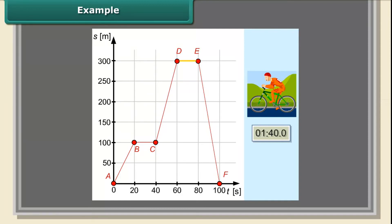Segment DE shows the cyclist stopped for 20 seconds. Then, from segment EF, we can discover that the cyclist turned back and, after 20 seconds, reached the location where he started his journey. He was moving with a constant speed of 15 meters per second.